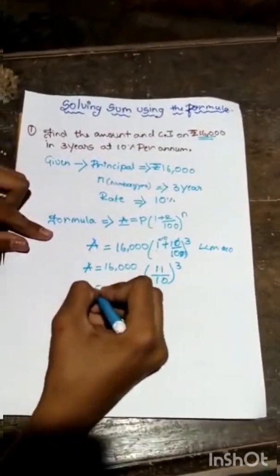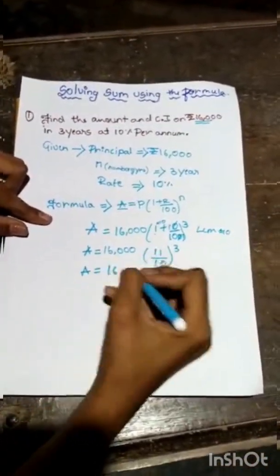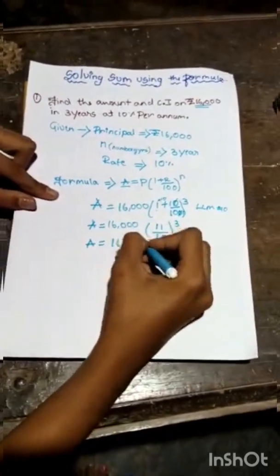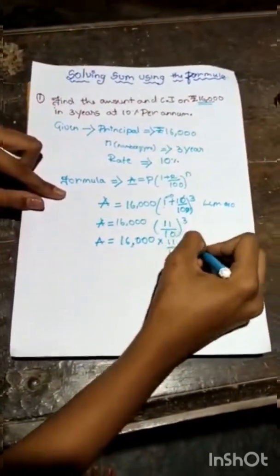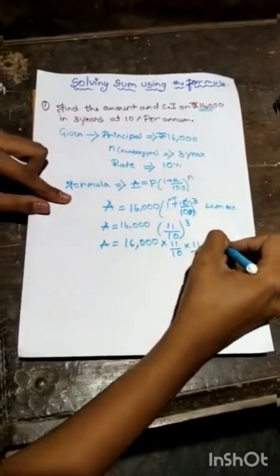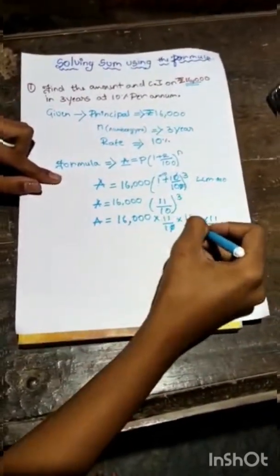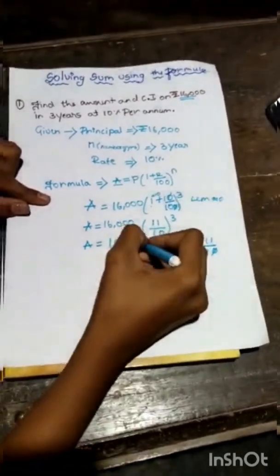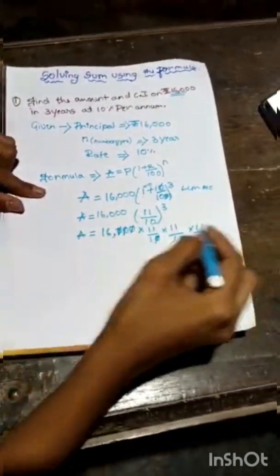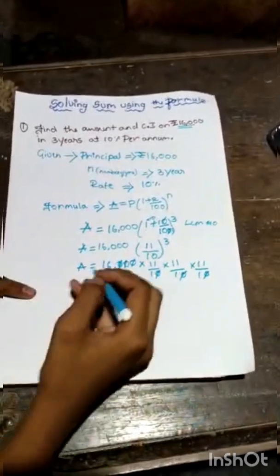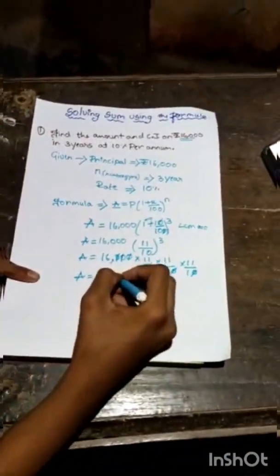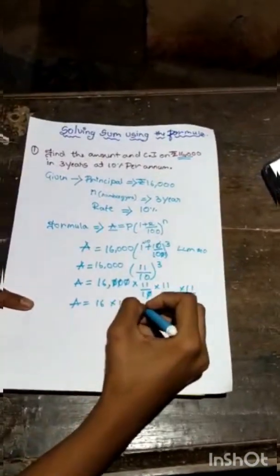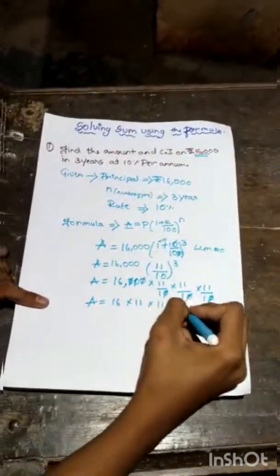A equals 16,000 into 11 by 10 into 11 by 10 into 11 by 10. Here we'll cancel, we cancel the zeros. So all the denominators are 1. Then we should not consider that 1. So we just multiply 16 into 11 into 11 into 11.